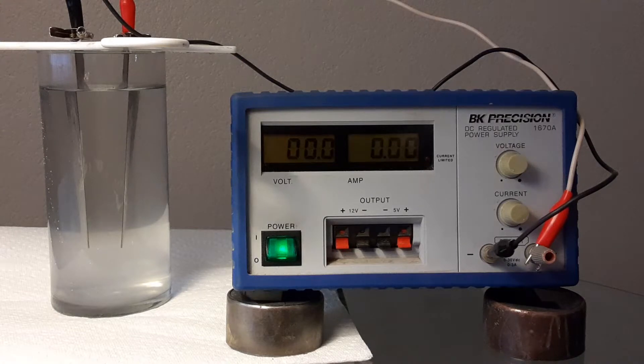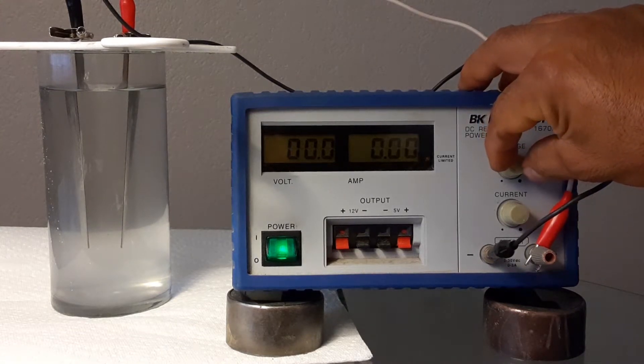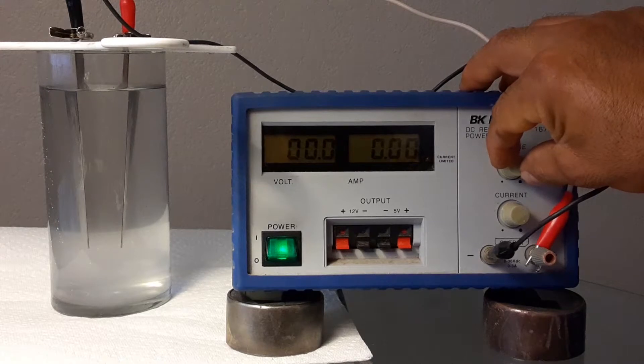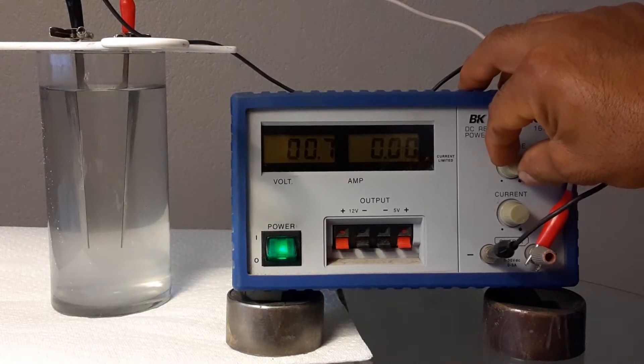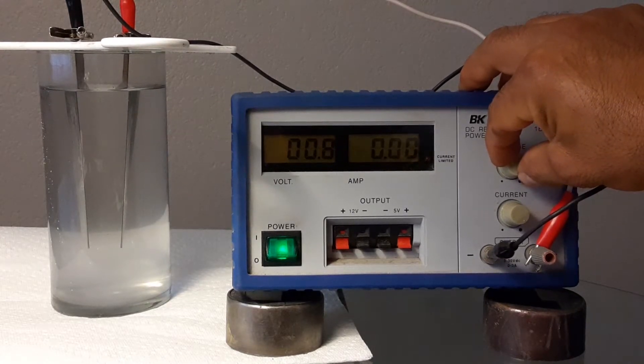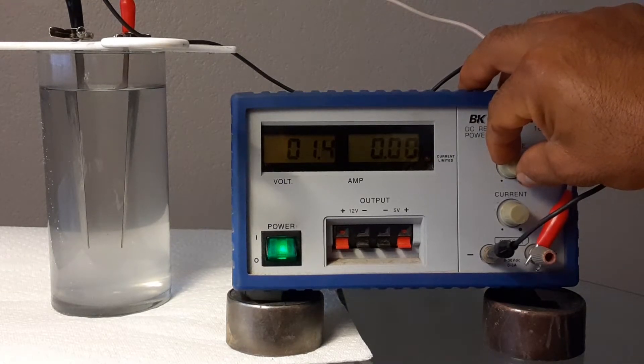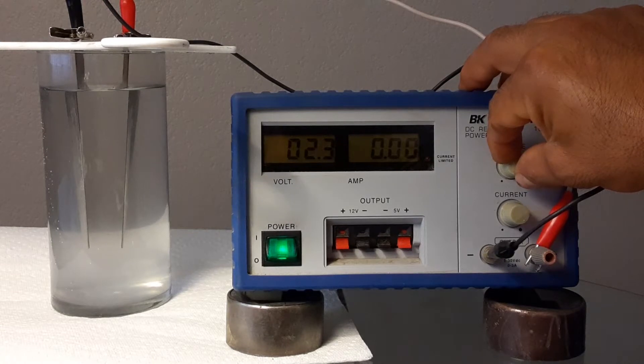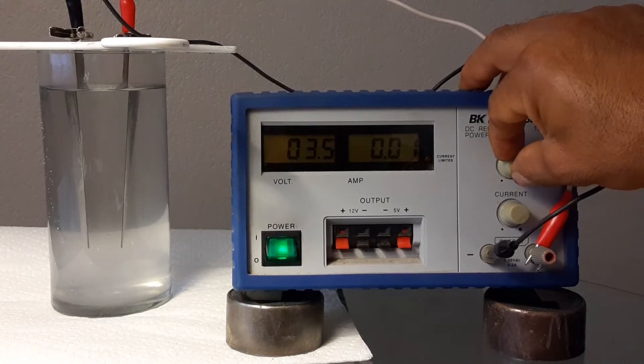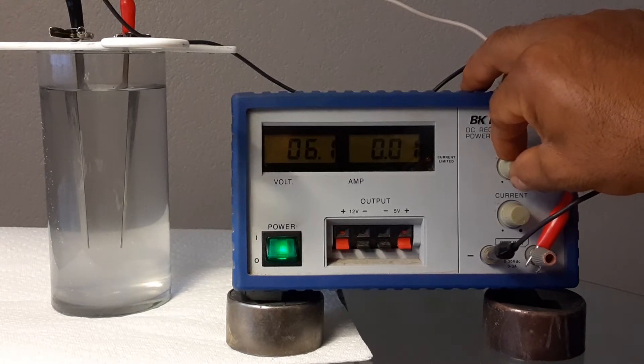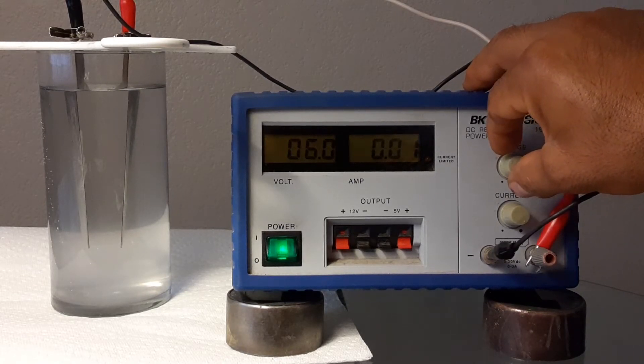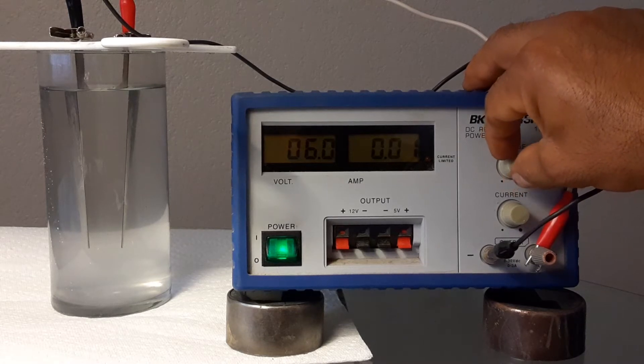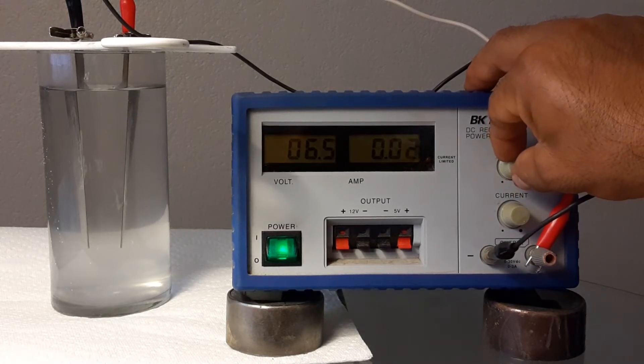I will move slowly the voltage and you can see how the voltage is increasing. We don't have any current because we are doing some inside the solution. Normally between three to four volts we start to have the reaction. In this case we have six volts and a little bit of current.